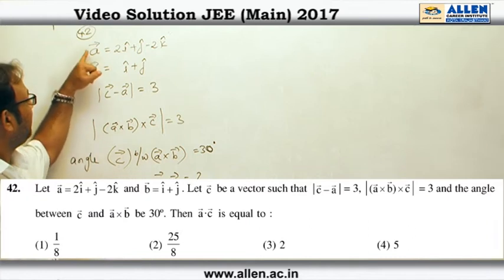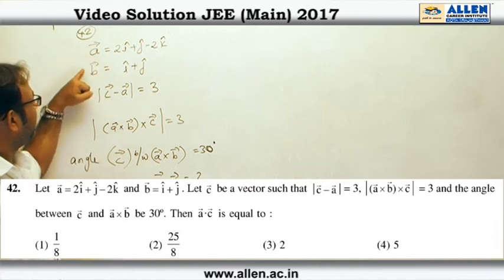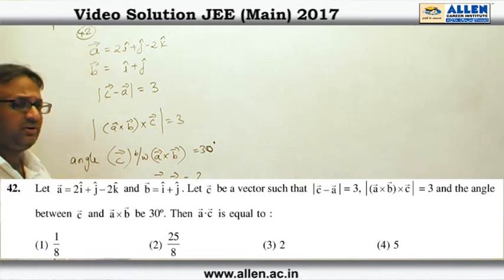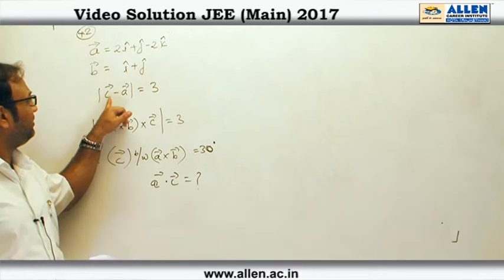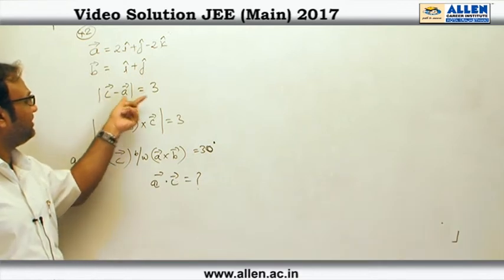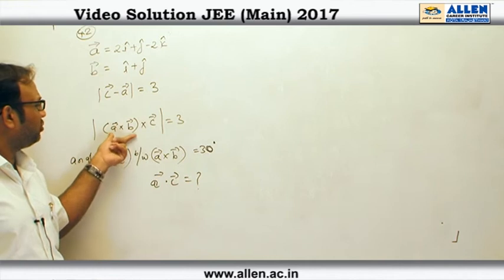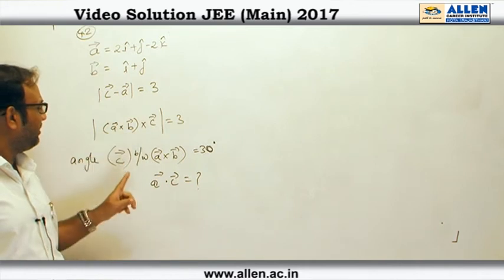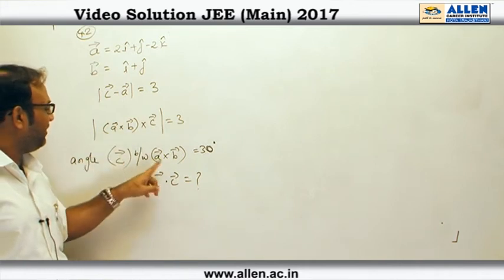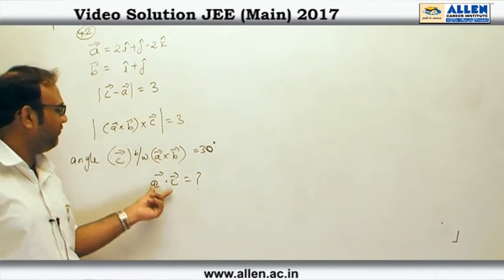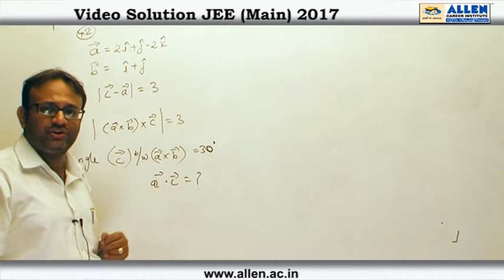In this problem, we are given vector A and vector B. There is an unknown vector C, and its modulus |C - A| is given as 3. Its cross product with A×B is given, the angle between A×B and vector C is given, and we have to find A·C.